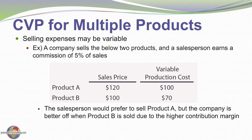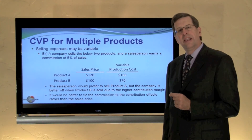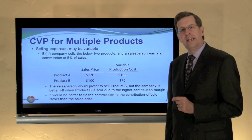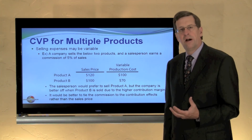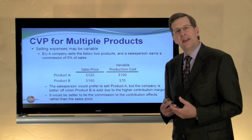A salesperson would prefer to sell Product A because 5% of $120 is more than 5% of $100, so they have incentive to steer customers toward Product A. However, this is not congruent with the interest of the entity, because the contribution margin is much higher on Product B. These calculations show how one needs to be very careful in providing incentive compensation so that it aligns with the interests of the organization.